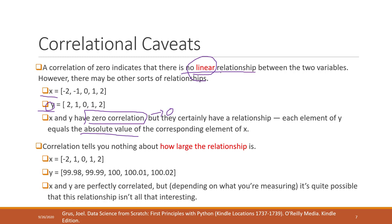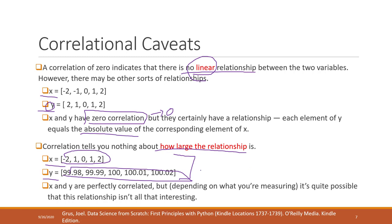The second concept to keep in mind is that correlation cannot tell you how large the relationship is. For example, X and Y might be perfectly correlated, but X has very small values and Y has very large values. It cannot describe the magnitude of the relationship — the correlation might just reflect noise in one variable while the other is relatively stable.